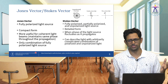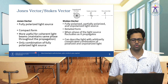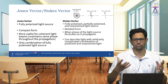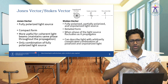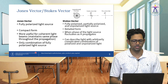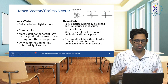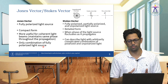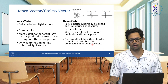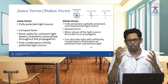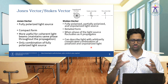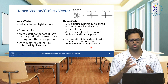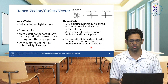Regarding combinations: with Jones vector, only combinations of fully polarized light sources are possible. However, with Stokes vector, you can handle very complicated combinations of polarized and unpolarized light sources. So based on the light source you have, you choose whether to use Jones or Stokes vector.